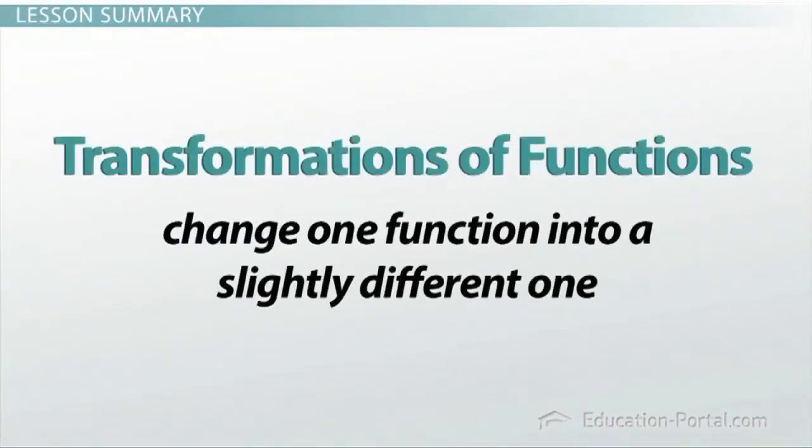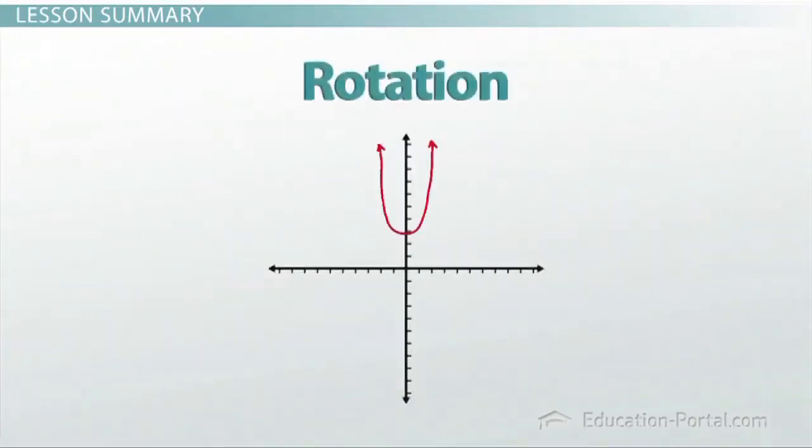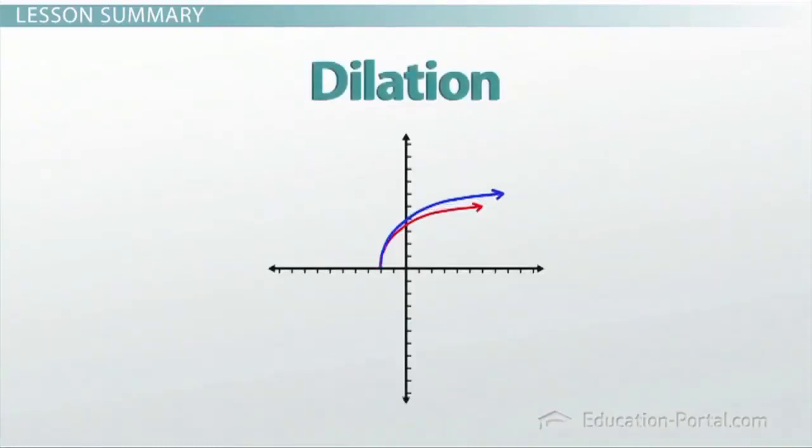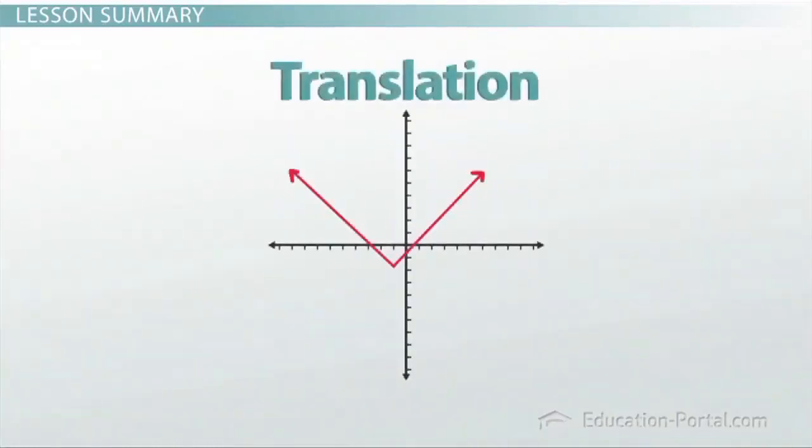Let's review. Transformations of functions change one function to a slightly different one. Rotations spin the function. Reflections flip the function across a line, kind of like a mirror. Dilations stretch or shrink the function, and translations slide the function around.